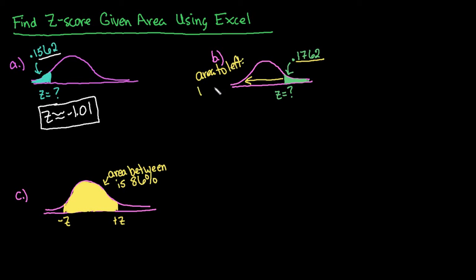by doing 1 minus the area to the right. Okay, and you don't actually have to find this. You can use Excel to find this. But the area to the left is always 1 minus the area to the right. So we can just plug that value in.